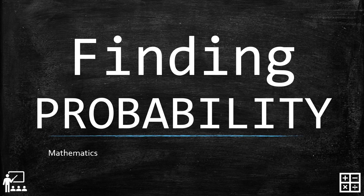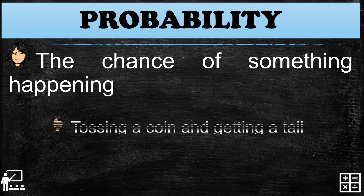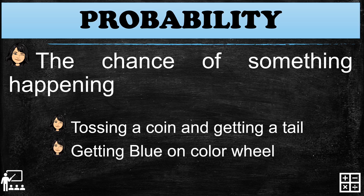This video lesson is about finding probability. If you want to know basic information about probability, you may use my previous lesson. Probability is the chance of something happening, just like tossing a coin and getting a tail, or getting a blue color on a color wheel.